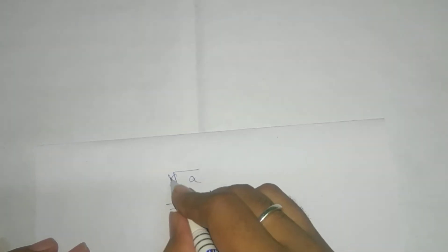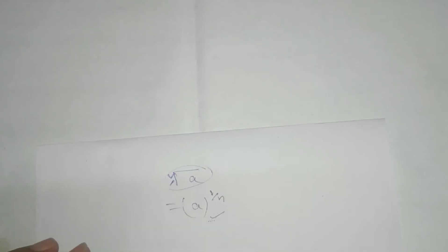We will call this one as a radical. This expression we call as radical. This nth root of a is a radical, not this one. This is a to the power 1 by n. We will read it as a to the power 1 by n.